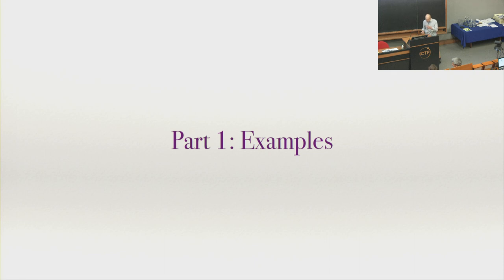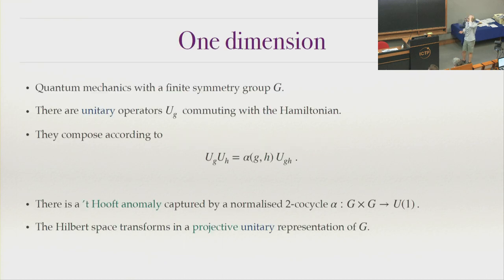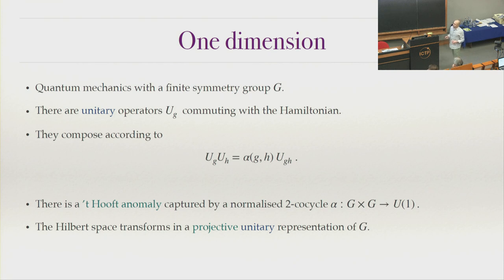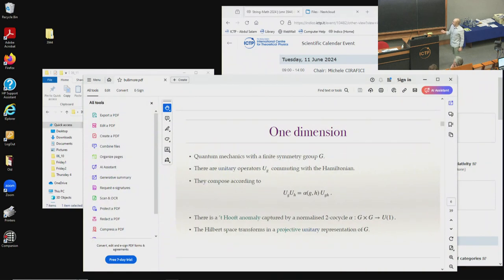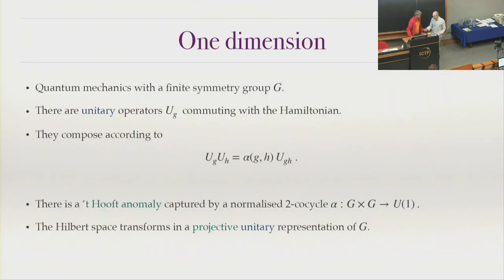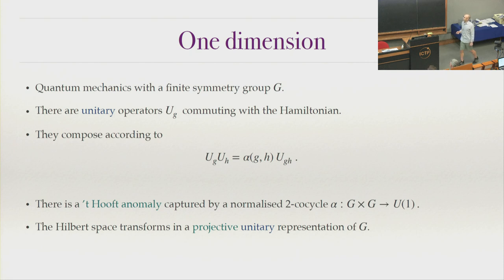Let me crack on with some basic examples. I want to start at the beginning with quantum mechanics and review some very basic things. Consider a quantum mechanical system in one dimension with a finite group symmetry. We know there are some unitary operators labeled by elements of the group that commute with the Hamiltonian — that's what we mean by symmetry. The fact that I have a group symmetry is captured in how these operators compose: they compose according to the group law, perhaps up to a small projective phase alpha.